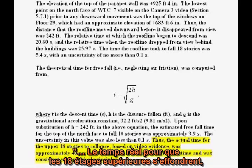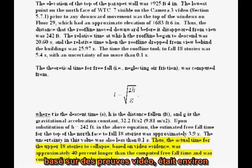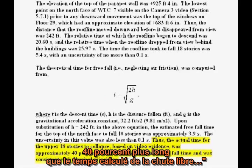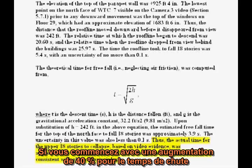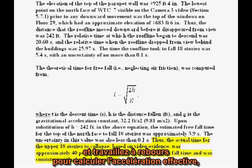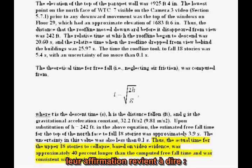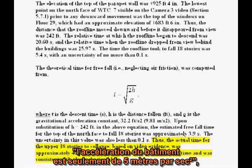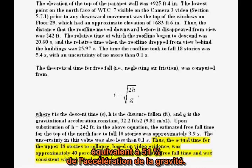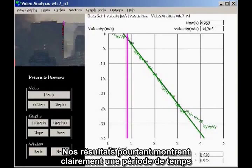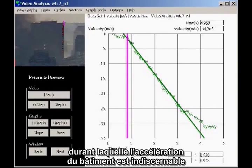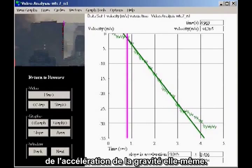More bizarre is the claim that — quote — "the actual time for the upper 18 stories to collapse, based on video evidence, was approximately 40% longer than the computed freefall time." If you start with a 40% increase in the time of fall and work backwards to compute the effective acceleration, their claim is equivalent to saying the acceleration of the building is only 5 meters per second squared, which is 51% the acceleration of gravity. Our results, however, clearly show a significant stretch of time in which the acceleration of the building is indistinguishable from the acceleration of gravity itself — in other words, complete freefall.